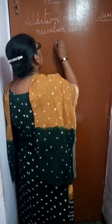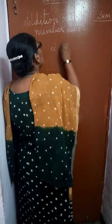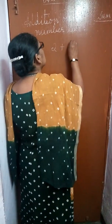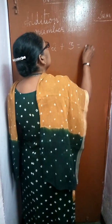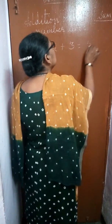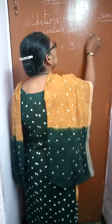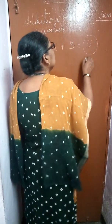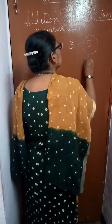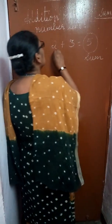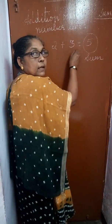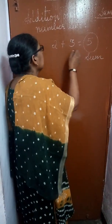So we take 2 plus 3. 2 plus 3 is equal to 5. So, this 5 is called the sum of 2 plus 3.